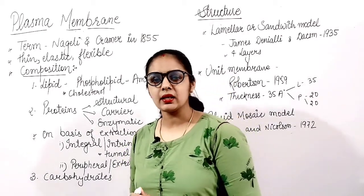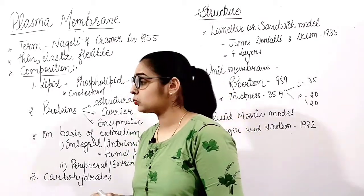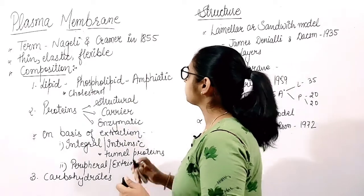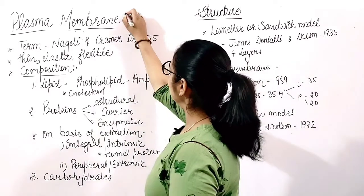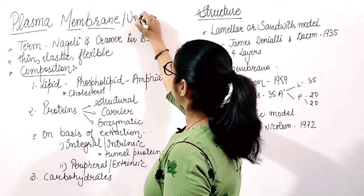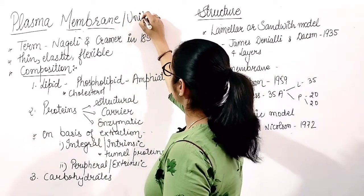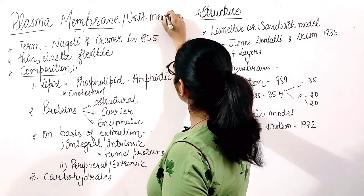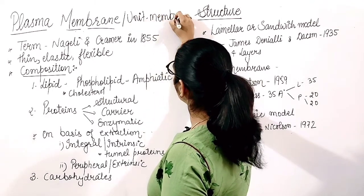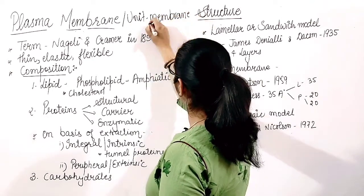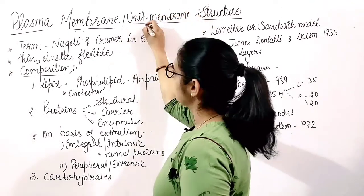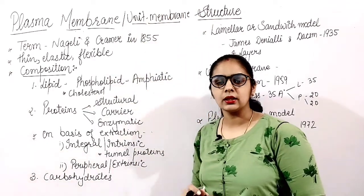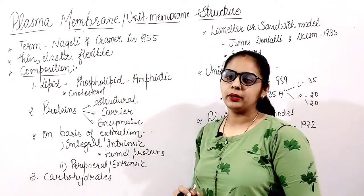The plasma membrane is also called the cell membrane and the unit membrane. If we talk about animals, there will be one covering. If we talk about plants, then a cell wall will also be found.